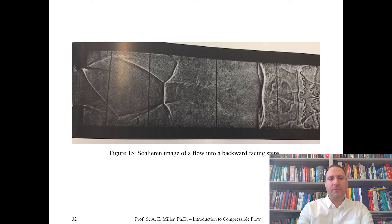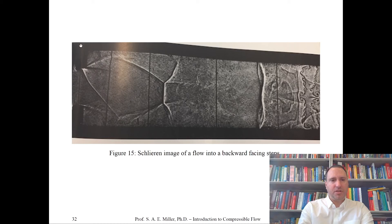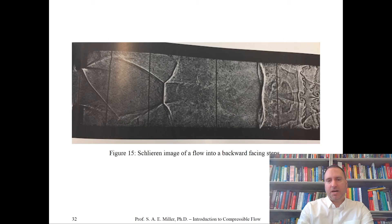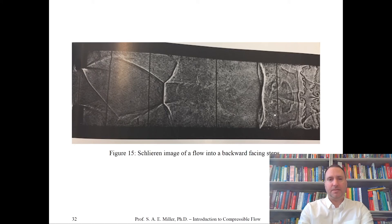Here's another Schlieren image of a backward facing step in a wind tunnel. The wind tunnel walls are the black parts, and it has a little contraction. The flow enters from the left and exits the right of this wind tunnel. All these lines and strange granulations of the flow are basically different types of shocks and expansions, vortices which are compressible, and all kinds of strange phenomena. We'll talk some about that.